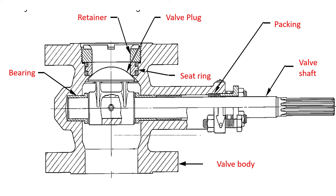The bearing — sometimes called a bushing — locates and supports the valve shaft; that is its main application. Finally, the packing is used to arrest process fluid leakage along the valve shaft to the outer area of the control valve. These are the internal components of the rotary shaft valve, similar to the sliding stem control valve, with the bearing and bushing being the distinguishing elements.